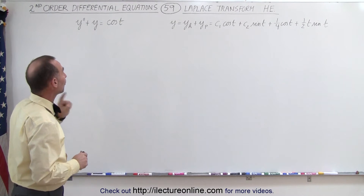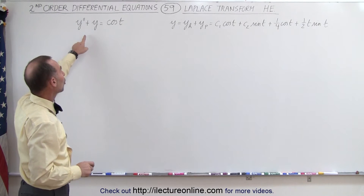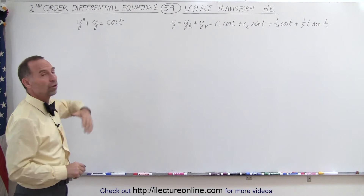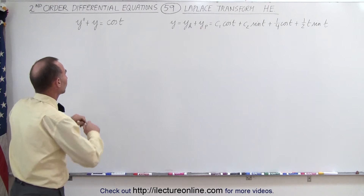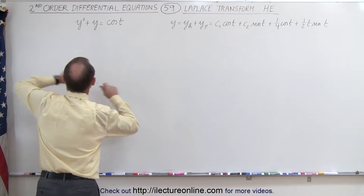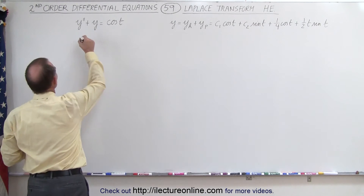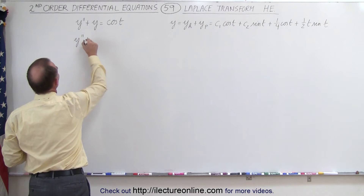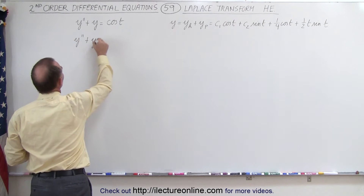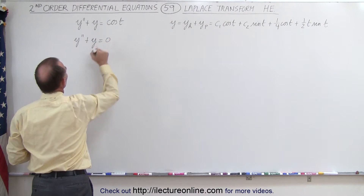We are first going to take the homogeneous part of this equation and solve it using the Laplace transform, so we're going to solve only this equation: y double prime plus y equals zero.